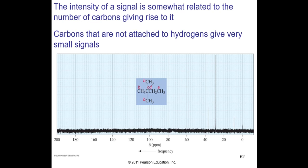The intensity of a signal is somewhat related to the number of carbons giving rise to it. Carbons that are not attached to hydrogens give very small signals, such as quaternary carbon C in this spectrum. Do not integrate C-13s like we do with proton NMR. It has to do with low-lying orbitals and heavy stuff. We're interested in structure determination in this course.